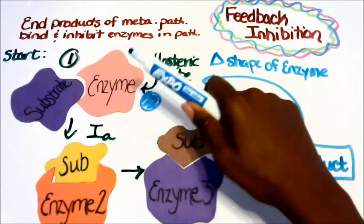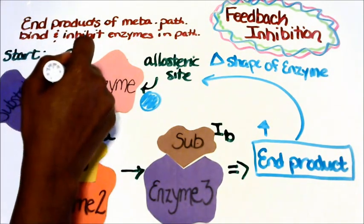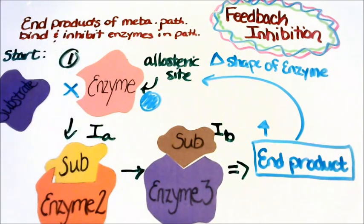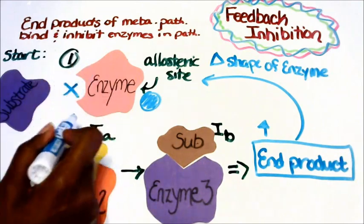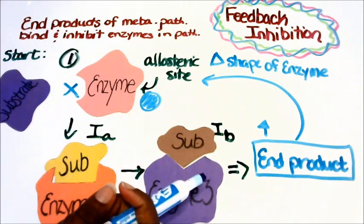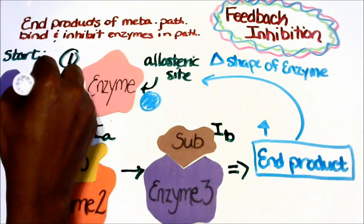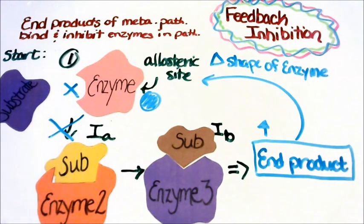When the shape changes, that means that the substrate can no longer bind to that enzyme. And if it can't bind to the enzyme, then intermediate A cannot happen, intermediate B cannot happen.